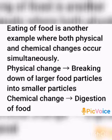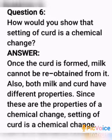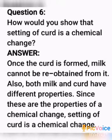Question number 6: How do you show that setting of curd is a chemical change? Answer: Once curd is formed, milk cannot be re-obtained from it. Also, both milk and curd have different properties. Since these are the properties of a chemical change, setting of curd is a chemical change.